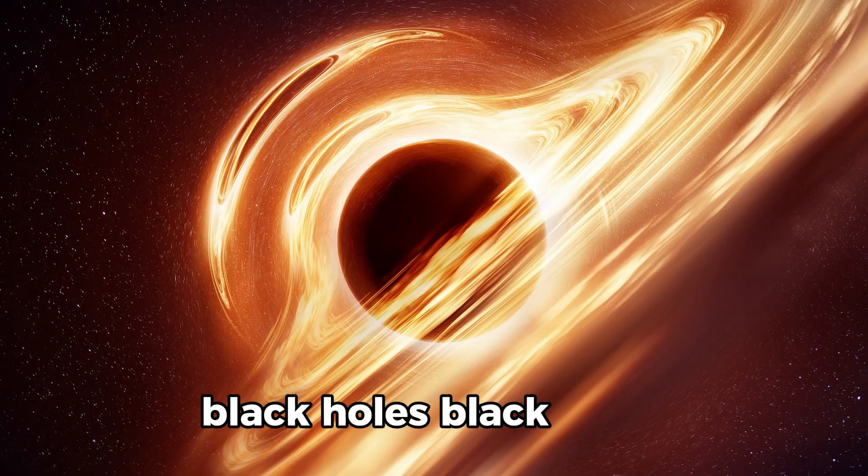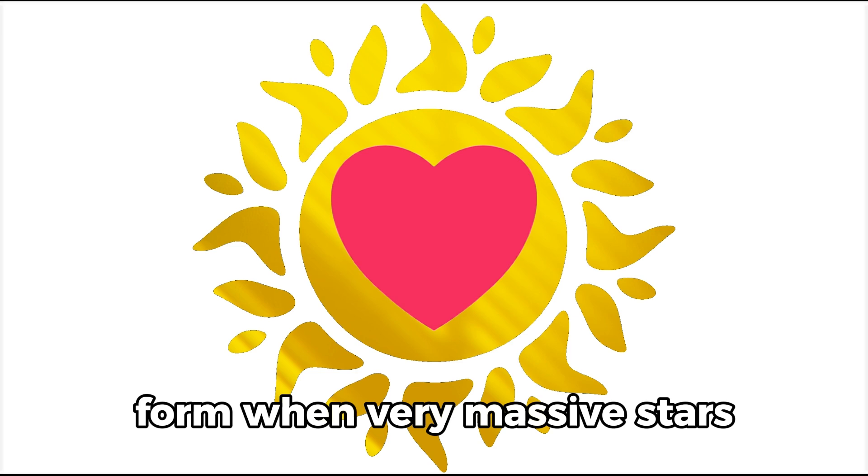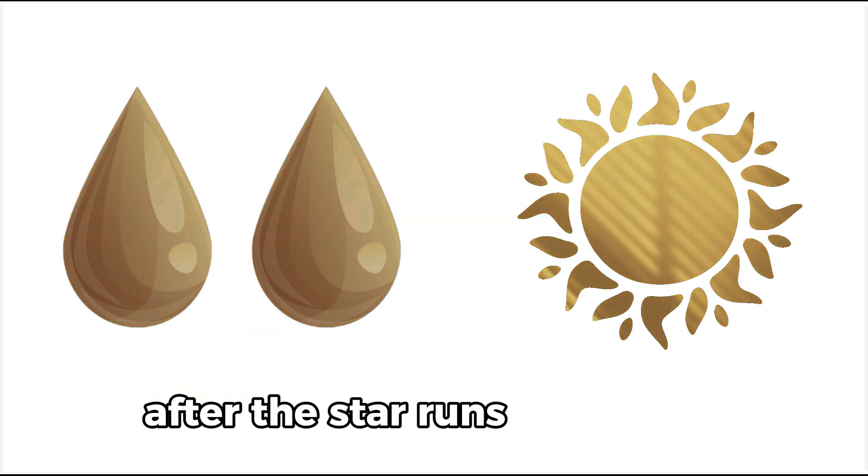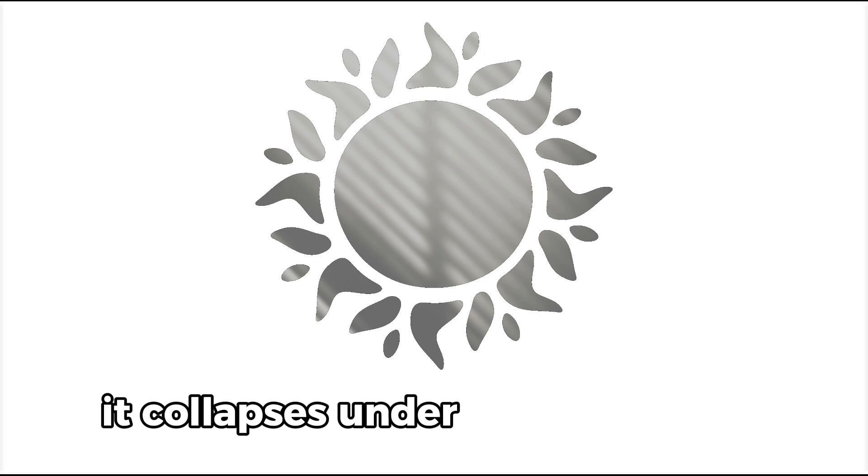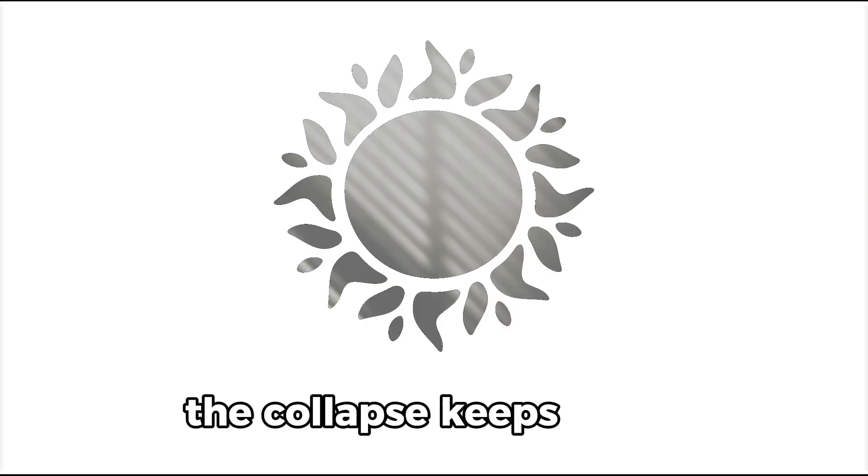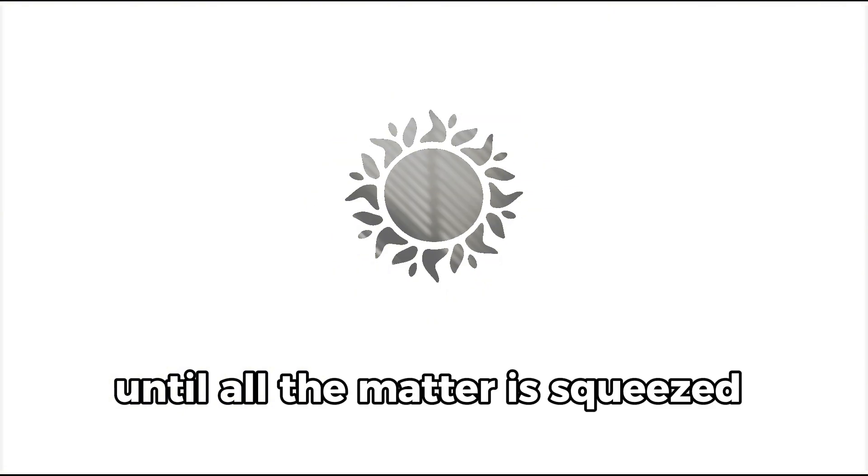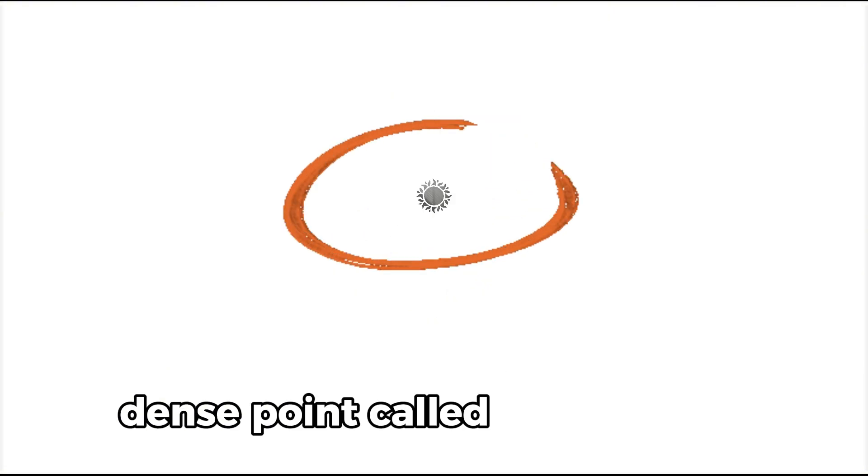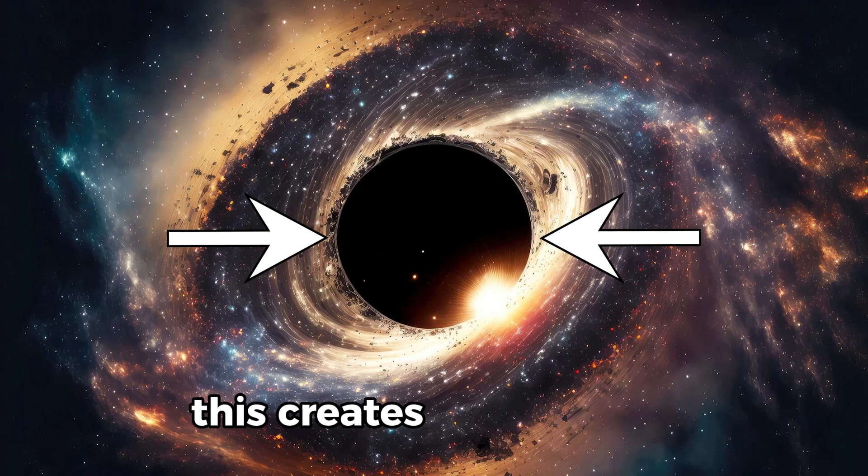Black holes form when very massive stars reach the end of their life. After the star runs out of fuel, it collapses under its own gravity. If the star is heavy enough, the collapse keeps going until all the matter is squeezed into a tiny, dense point called a singularity. This creates a black hole, an area where gravity is so strong that not even light can escape.